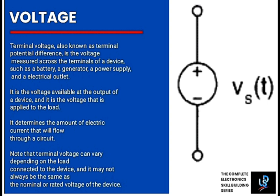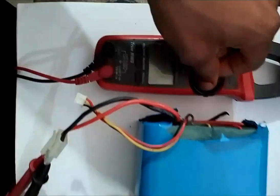Terminal voltage, also known as terminal potential difference, is the voltage measured across the terminals of a device, such as a battery, generator, power supply, and electrical voltage. It is the voltage available at the output of a device and it is the voltage that is applied to the load. Here is the multimeter.